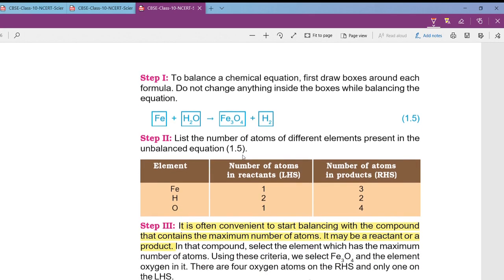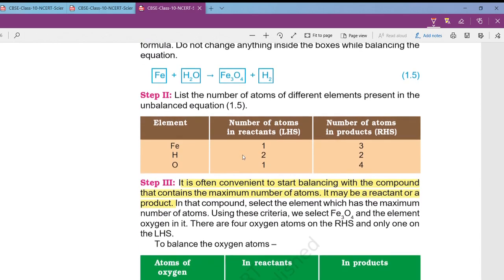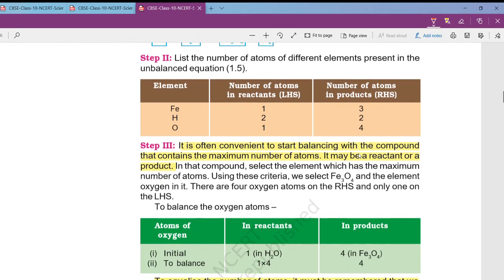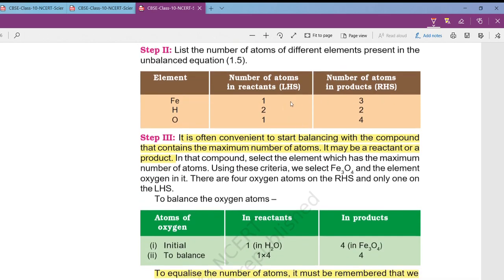Next observe where you need to balance the equation. Ferrous number of atoms on the reactant side is one, number of atoms of hydrogen on the reactant side is two, and number of oxygens is one. Similarly write number of atoms in the product side: Fe3 that means three ferrous and four oxygen atoms and two hydrogen atoms. Now by observing this you can understand that you need to balance oxygen and ferrous because hydrogen is two and two.